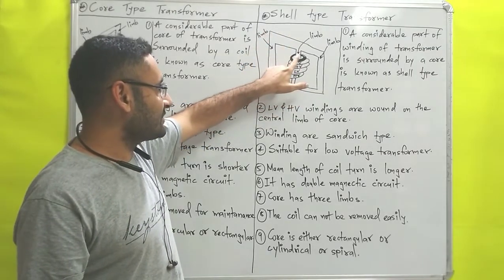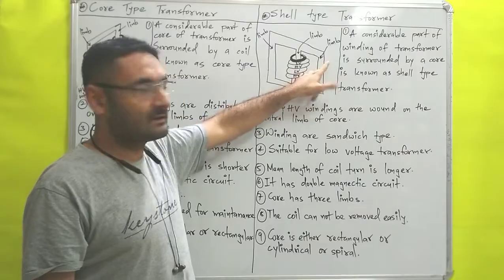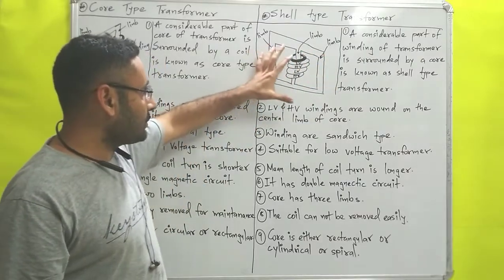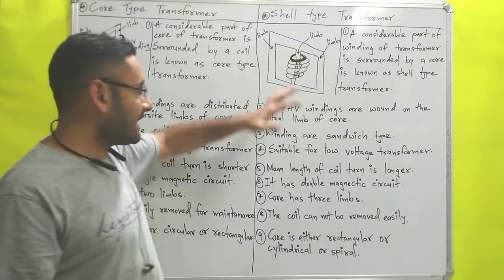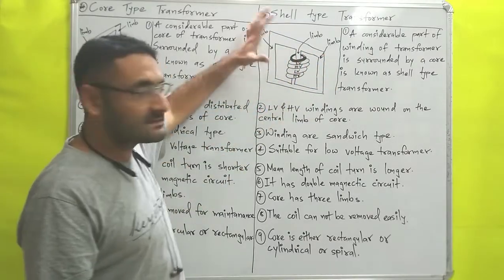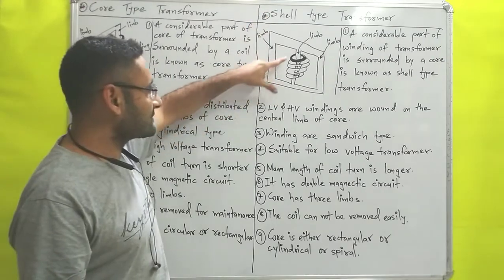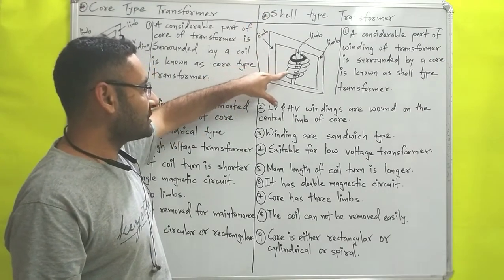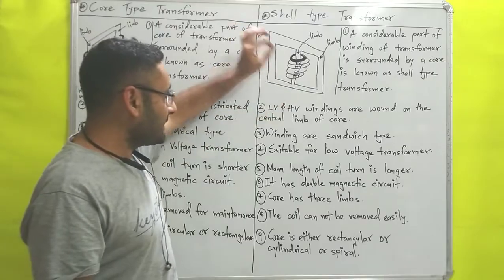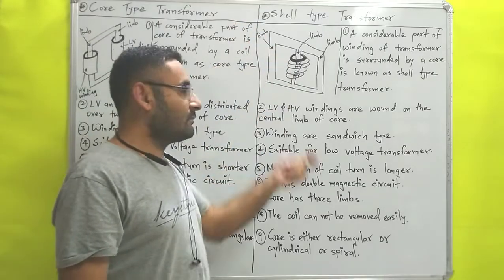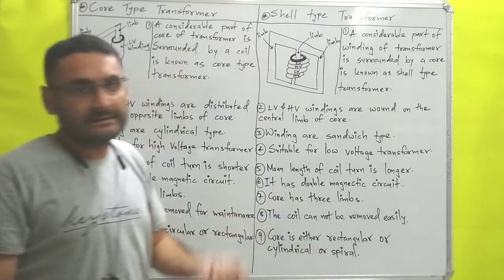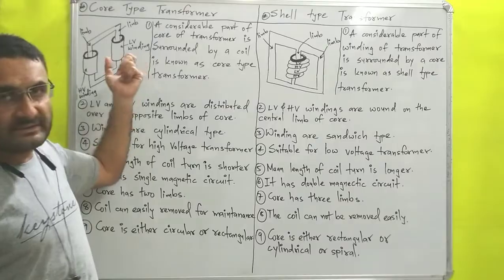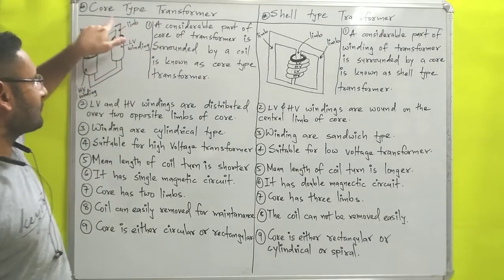Similarly, over here is the figure of the shell type transformer, in which the core has three limbs. The first limb is known as the central limb, and the last one is the other limb. The windings are sandwiched with each other — first low voltage winding, then high voltage, then low voltage, then high voltage — so its length of winding is increased.